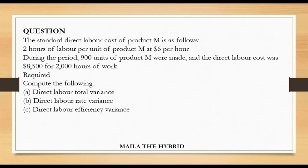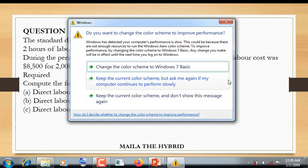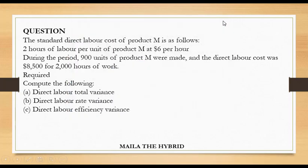The standard direct labor cost of product M is as follows. In the question, we are provided with the standard as well as actual information. We are told: 2 hours of labor per unit of product M at $6 per hour. These 2 hours represent standard hours per unit planned before the start of the period, and we expected to pay labor at $6 per hour.